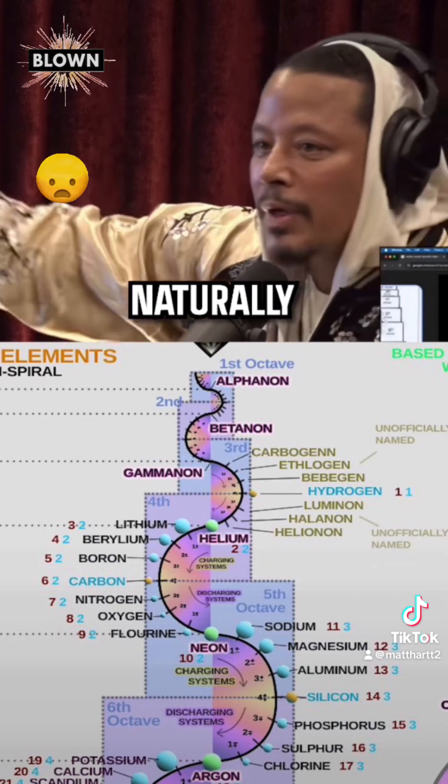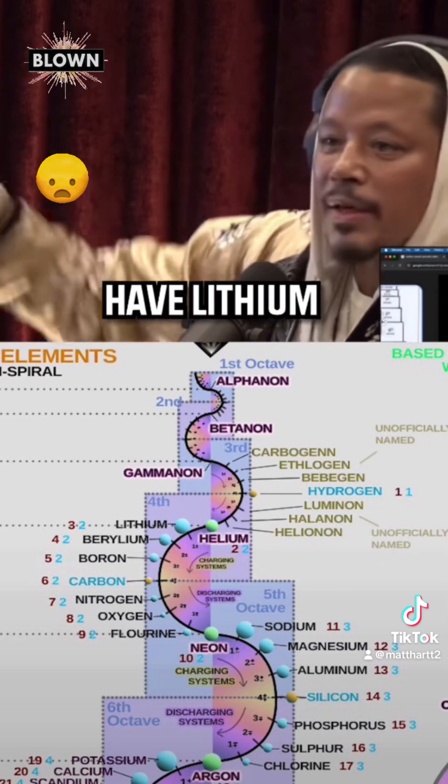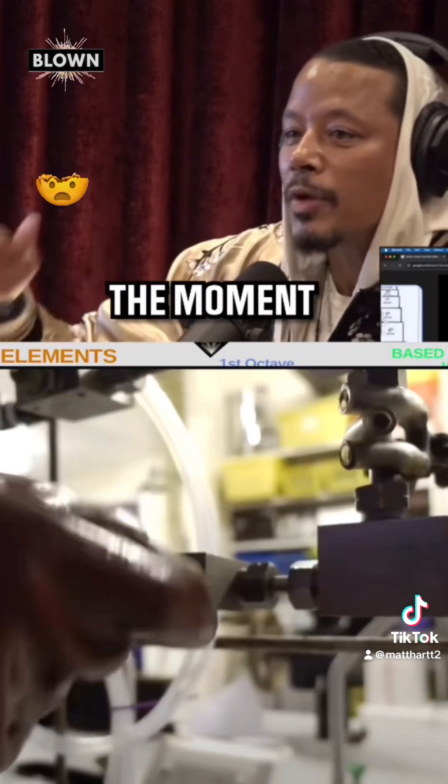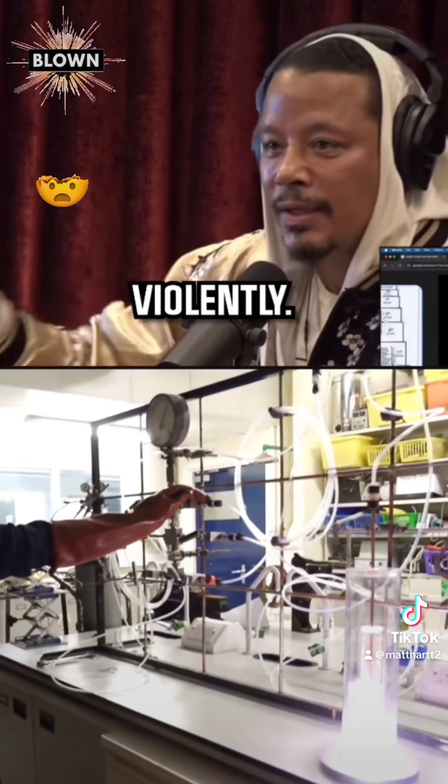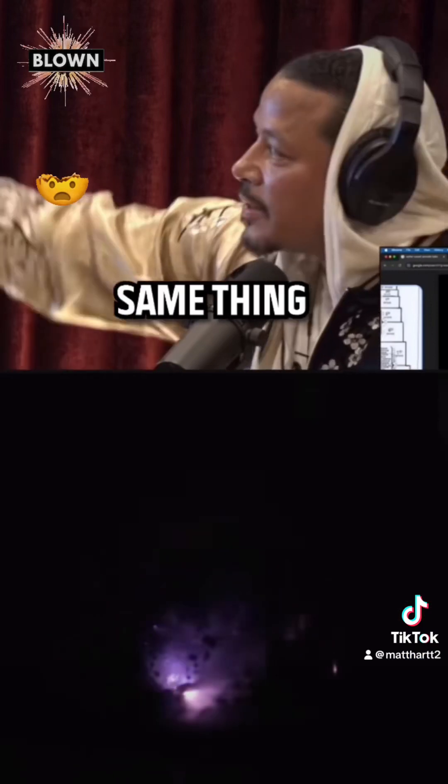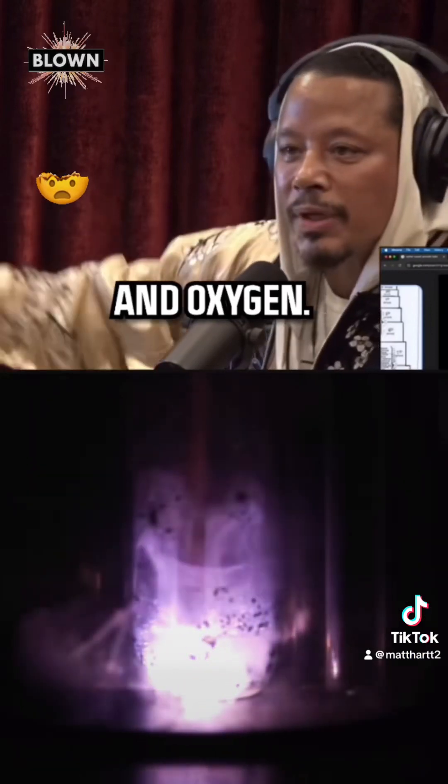Fluorine and lithium naturally mate. If you have lithium bonded with any other element, the moment that fluorine is introduced, it will break all bonds violently so it can bond with fluorine. Same thing with beryllium and oxygen.